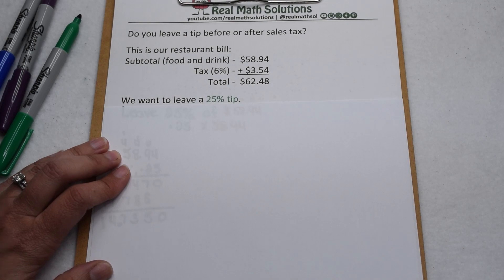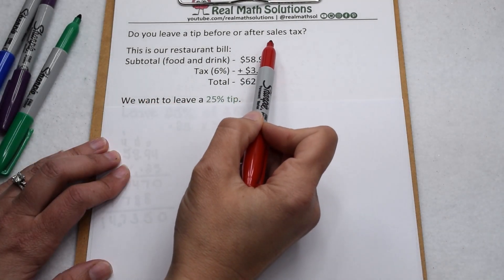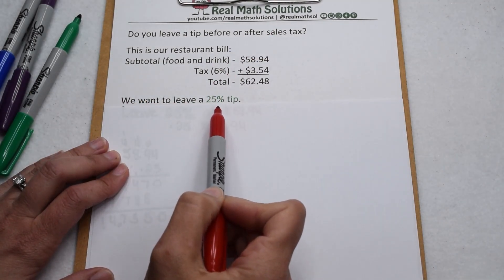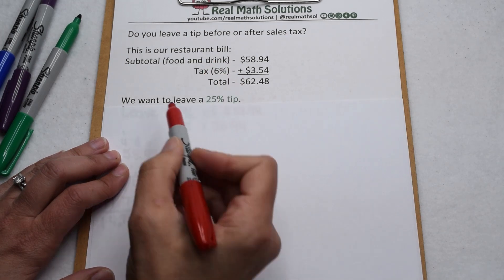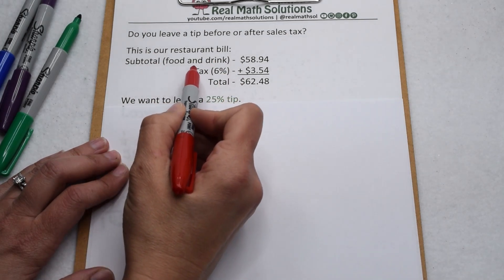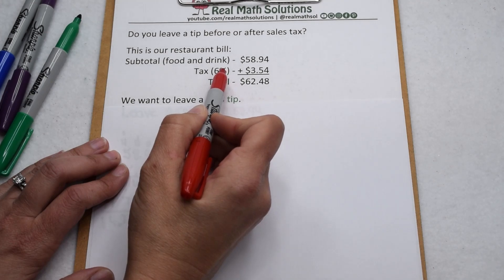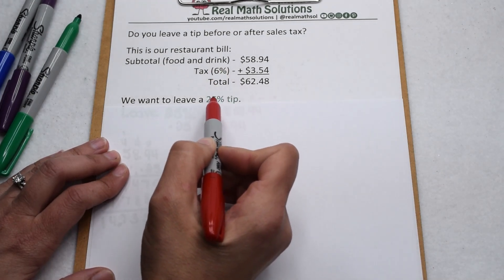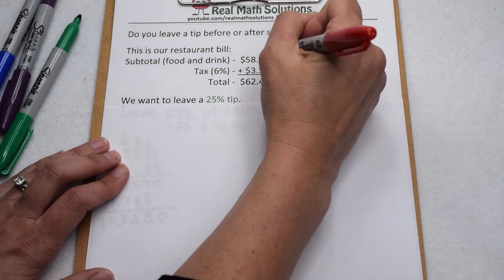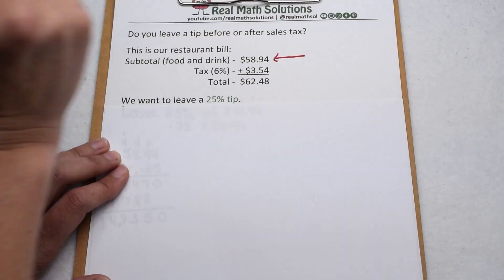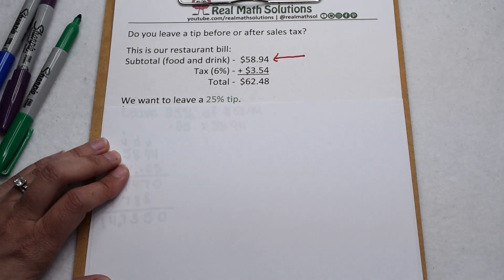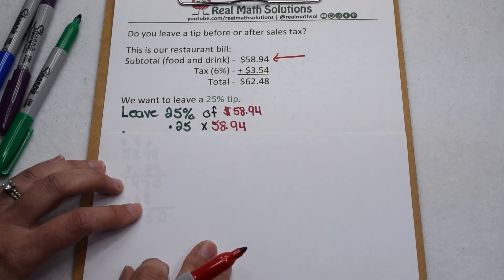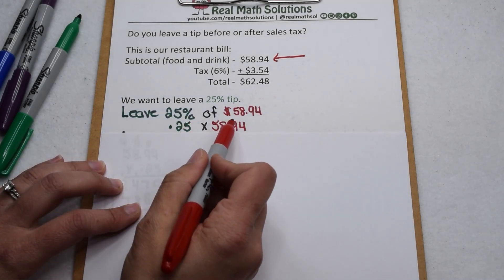One of the biggest questions about tipping is: do we leave the tip before or after sales tax? Say we want to leave a 25% tip on our restaurant bill — which number do we leave it on? Our subtotal represents what we spent on food and drink; tax is what they pay to the state. Combined, those are worth $62.48. We're going to leave the 25% tip on our subtotal — the amount spent on food and drink — which is $58.94.